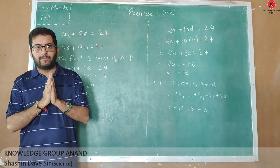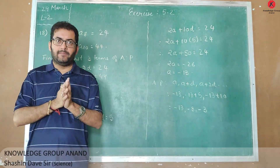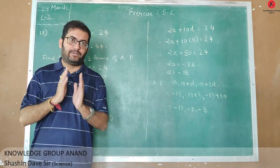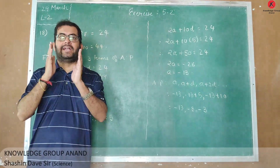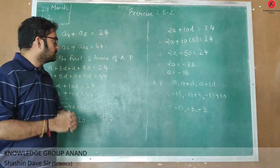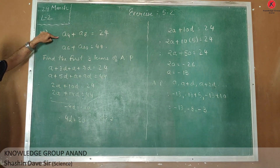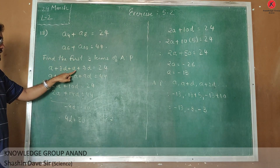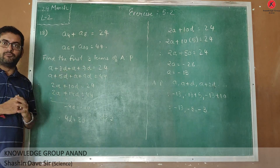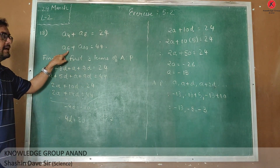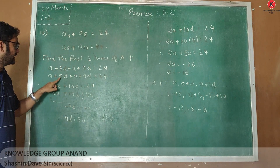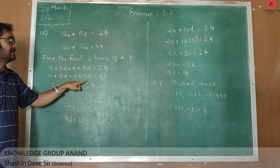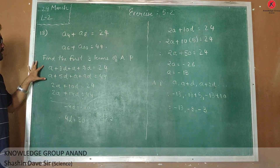The first 3 terms of the AP are represented as A, A plus D, and A plus 2D. So in short, I need to find the values of A and D using the data given in the question. Now, A4 is represented as A plus 3D, and A8 is represented as A plus 7D, equal to 24. Similarly, A6 is represented as A plus 5D, and the 10th term is represented as A plus 9D, equal to 44.